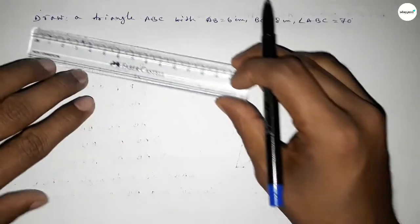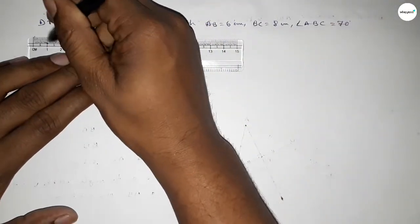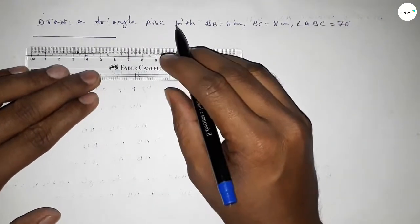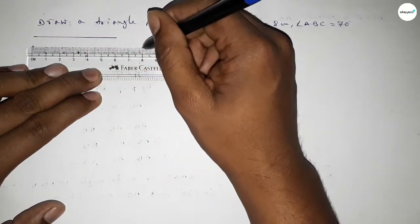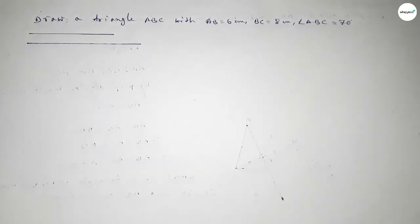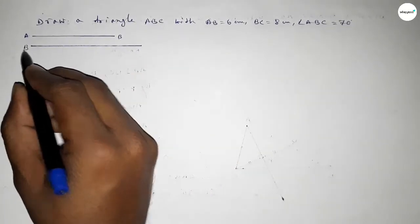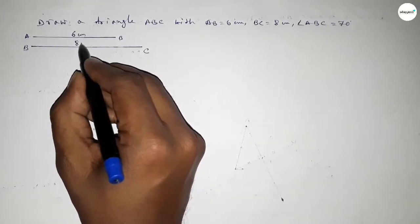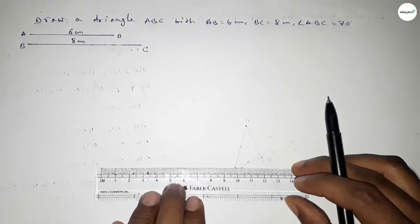First of all, we have to draw a line of length 6 centimeters — so this is 6 — and another line of length 8 centimeters — so this is 8 centimeters. This one is AB and this one is BC. So AB equal to 6 centimeters and BC equal to 8 centimeters.